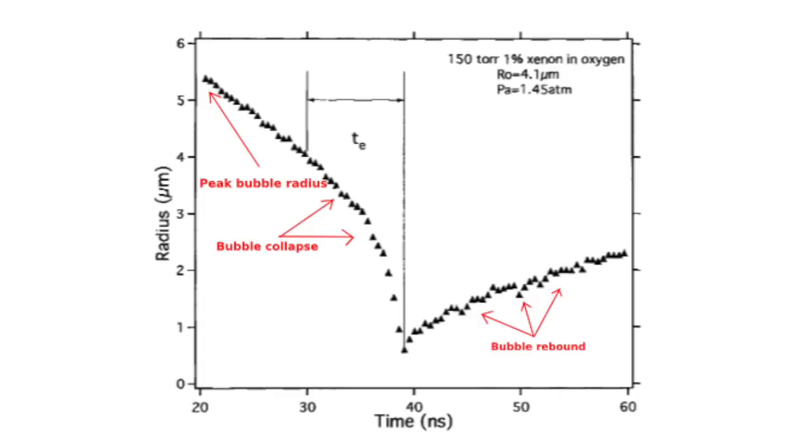The accompanying graph depicts a collapse of a cavitating bubble over time. Notice that the bubble has a peak radius of about 5.3 micrometers. The bubble then rapidly collapses at about 20 nanoseconds, as the bubble bottoms out, approaches the Van der Waals radius, it springs back and oscillates through several cycles of expansion and contraction.